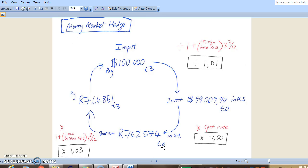Now we will only pay this in 3 months time so it will incur interest. How much will we owe at the end of 3 months? Well we have to multiply by 1 plus the local borrowing rate times 3 over 12 because it's again only for 3 months.